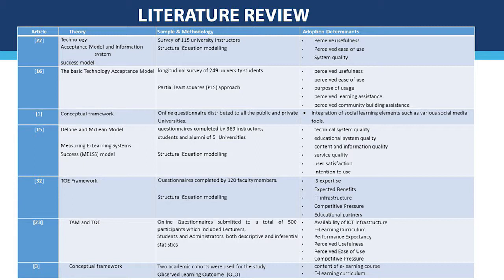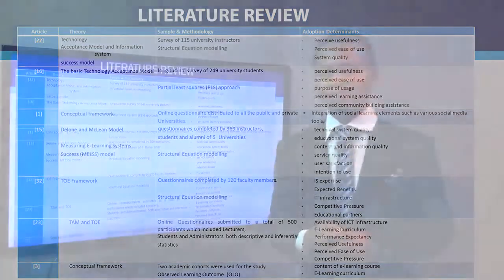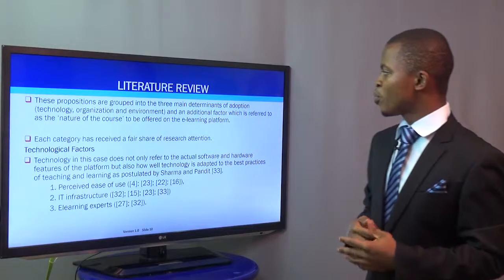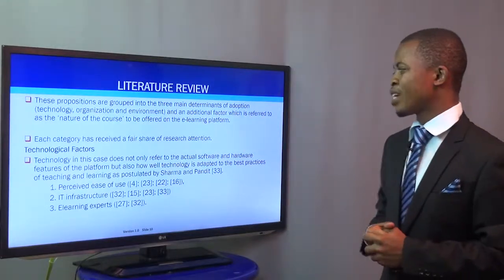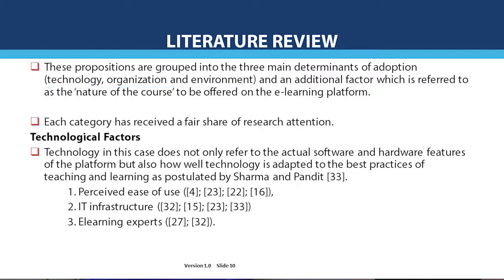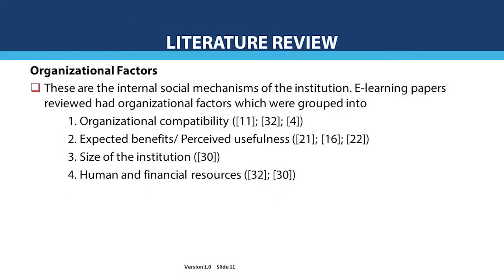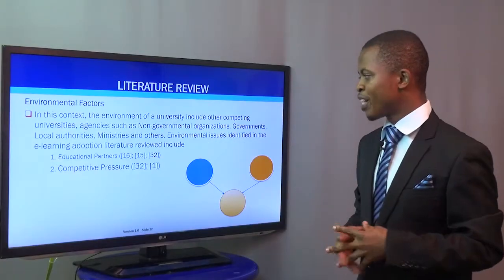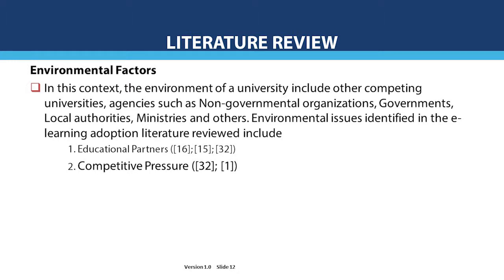These factors are grouped into three major determinants of e-learning adoption: technology, organization, and environment. For technological factors, we found perceived ease of use, IT infrastructure, and e-learning aspects. For organizational factors, it was discovered that organizational compatibility, expected benefits or perceived usefulness, size of the institution, and human and financial resources were the factors that influenced e-learning adoption. For environmental factors, we found two factors: educational factors and competitive pressure.